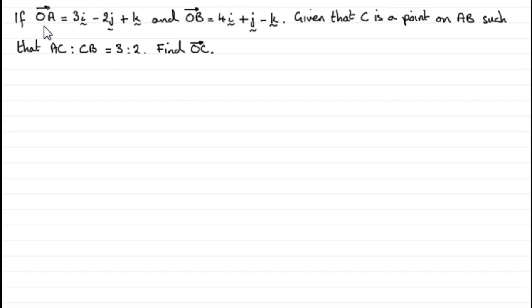What we've got here is if OA is the vector 3i minus 2j plus k, where i, j, and k are the unit base vectors in three dimensions, OB is the vector 4i plus j minus k, and we're given that C is a point on AB such that AC to CB is in the ratio 3 to 2. What we've got to do is find that vector OC.